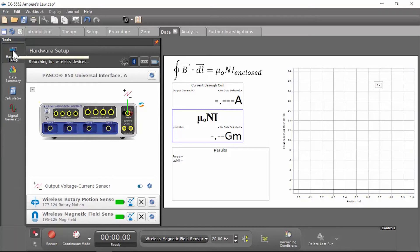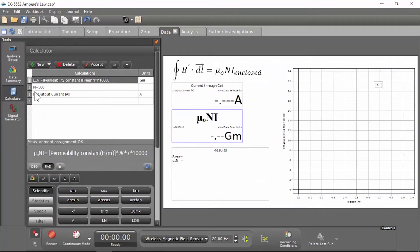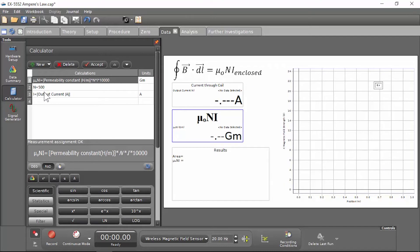And close the Hardware Setup tab. Let's click on the Calculator tab and ensure that our equation is here. N is equal to 500, which is the number of turns in the coil on the apparatus. And our I is our output current that is being measured from our 850.